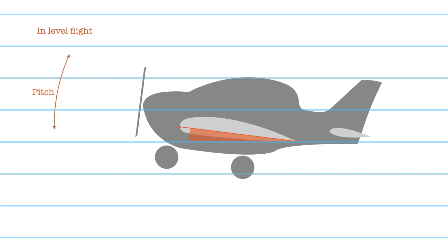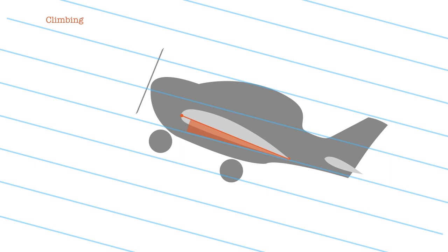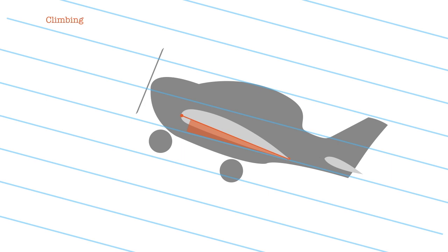In a steady climb, however, the relative airflow is no longer horizontal but assumes the direction of the aeroplane's flight path. Even if the nose is pointing higher up, the angle of attack may be the same as if it was in level flight.